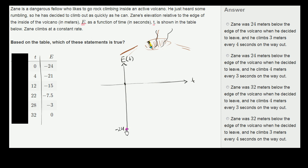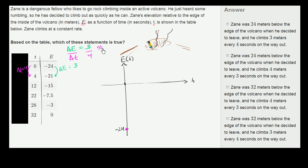When time increases by 4 seconds, what's his change in elevation? He's going from negative 24 to negative 21 — he increased by 3. So his change in elevation is positive 3. At what rate is he increasing his elevation with respect to time? Change in elevation over change in time is 3 over 4. The triangle symbol just means the Greek letter delta — shorthand for 'change in.' So change in elevation over change in time is 3 fourths. One way to think about this: he goes three-fourths of a meter per second. The units are meters over seconds.